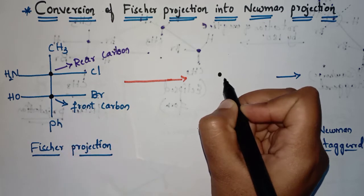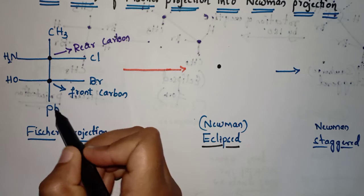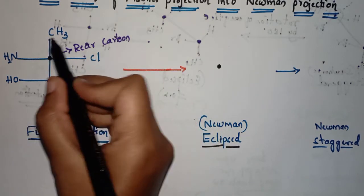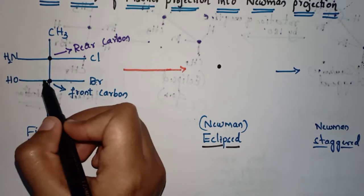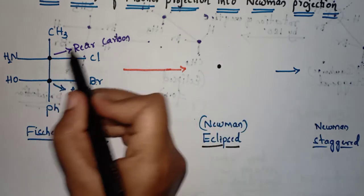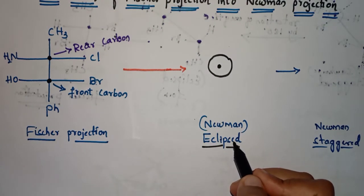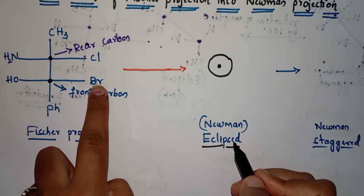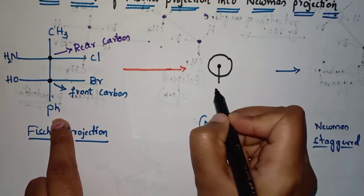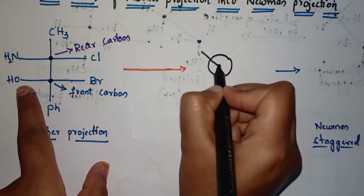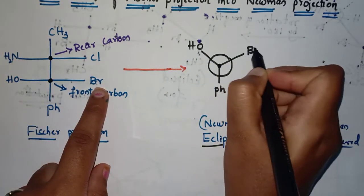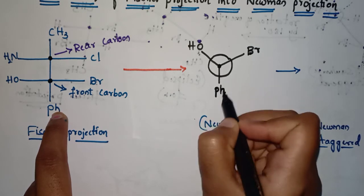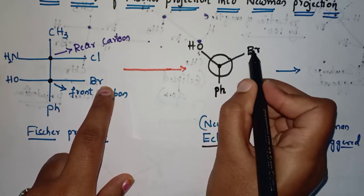For the front carbon, the attached groups are Ph (phenyl), OH, and Br. For the rear carbon, the attached groups are CH3, NH2, and Cl. The front carbon is represented by a dot and the rear carbon by a circle in the Newman projection. The groups on the vertical line — Ph — are represented at the top, and the other groups OH and Br are attached on the sides.